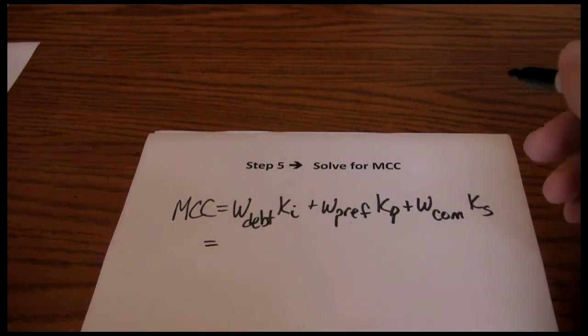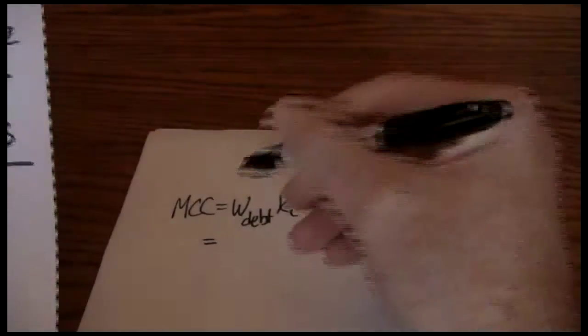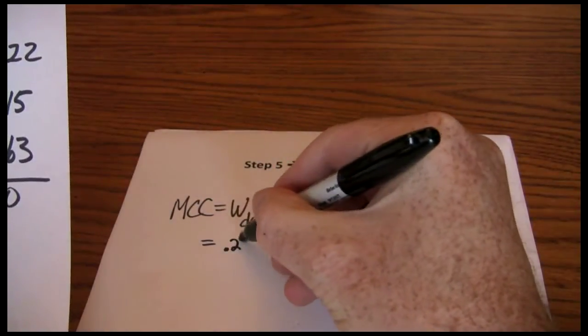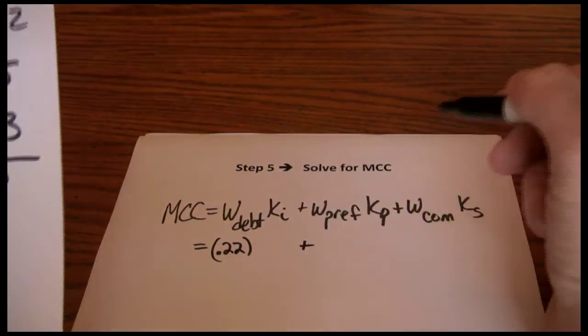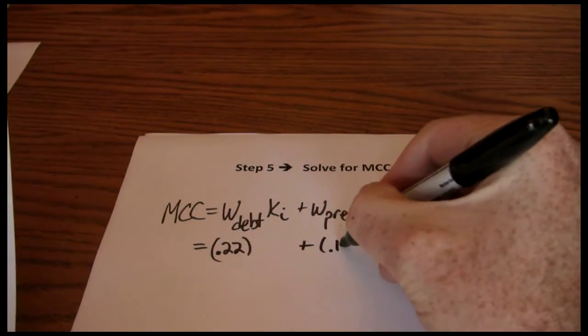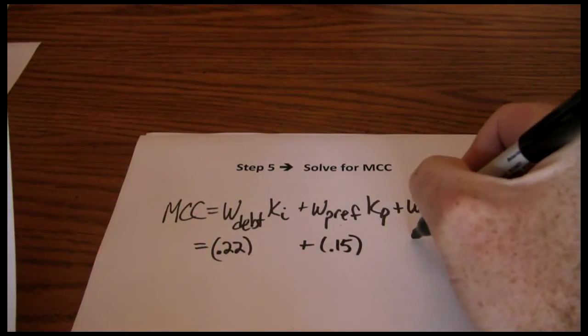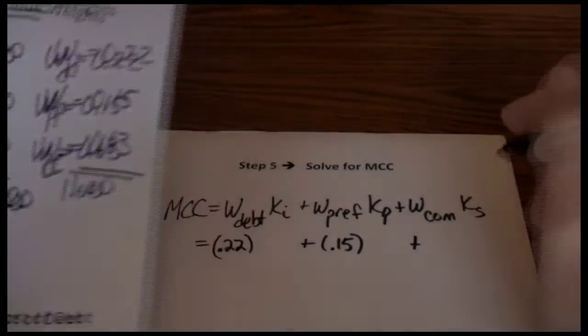Let's start with the weights. We said that the weight of debt was 0.22, the weight of preferred was 0.15, and the weight of common was 0.63.